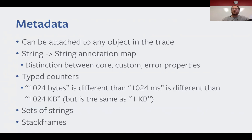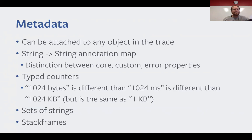We also have typed counters as an explicit separate type from the string annotation map. These counters have a numerical value, a particular type, and a precision. This lets us say 1024 bytes is distinct from 1024 milliseconds or 1024 kilobytes, while also recognizing that 1024 bytes and one kilobyte are equivalent. We've extended this over time to include sets of strings that can be appended to over time - used on execution units or traces - and stack frames for capturing sampled profiling data or the call stack at a particular RPC call.